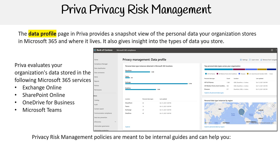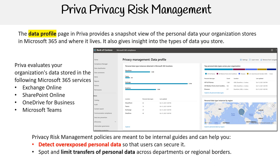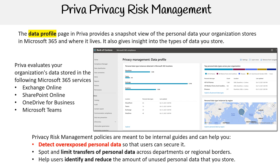Privacy risk management policies are meant to be internal guides and can help you detect overexposed personal data so that users can secure it, spot and limit transfers of personal data across departments or regional borders, and help users identify and reduce the amount of unused personal data that you store. That's Microsoft Priva and the privacy risk management concepts.